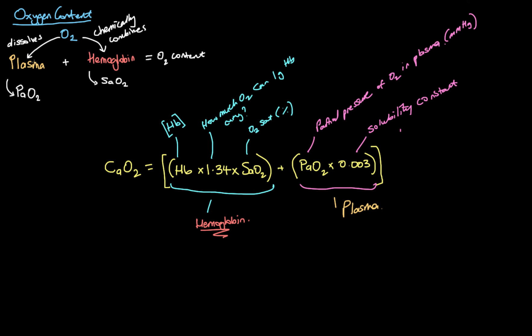So, adding the oxygen in the plasma to the oxygen bound to hemoglobin gives us all of the oxygen in the blood — our arterial oxygen content. We have the hemoglobin concentration, the maximum carrying capacity, and the saturation for the hemoglobin-bound portion, plus the partial pressure and solubility constant for the dissolved portion. In the next videos, we'll do some examples and play around with these numbers to see how this can be clinically significant.